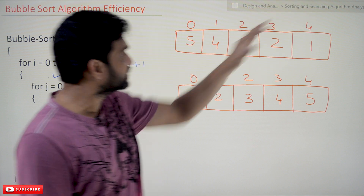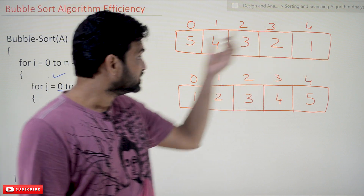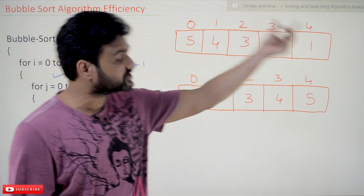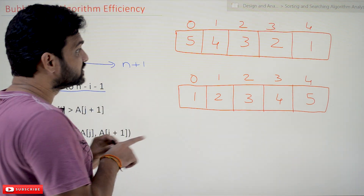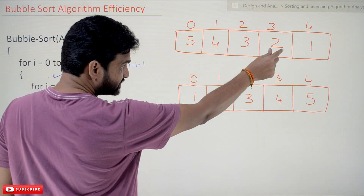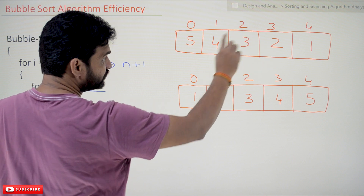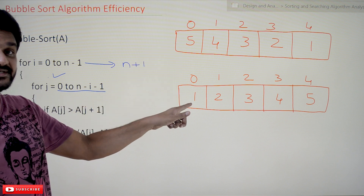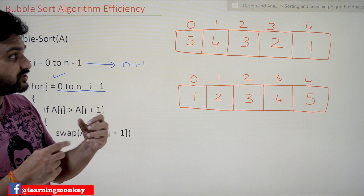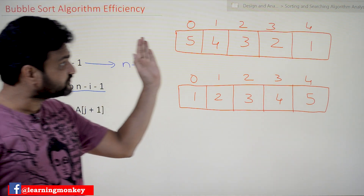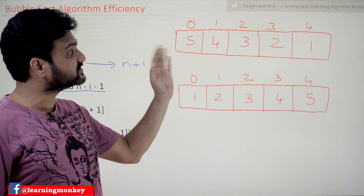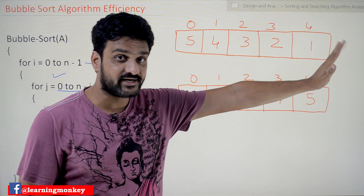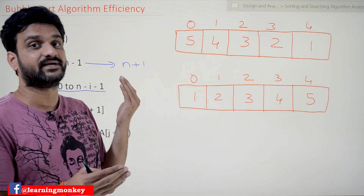As elements are placed in sorted order, for example in the first iteration the largest element 5 is shifted to the end. In the next iteration, 4 is identified as the largest and placed in its position, and so on. This is the worst case scenario. As we go on with the iterations, the array is divided into two halves: a sorted part at the end and the remaining unsorted part.